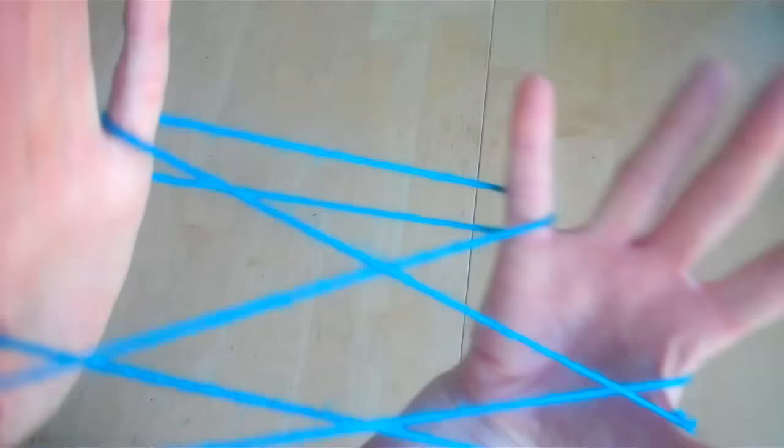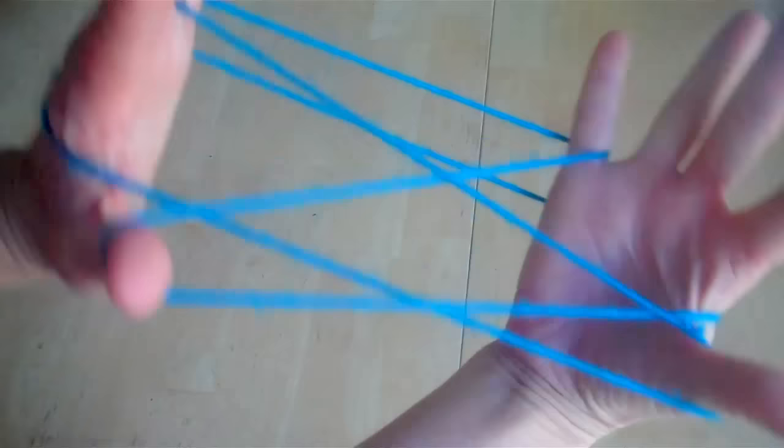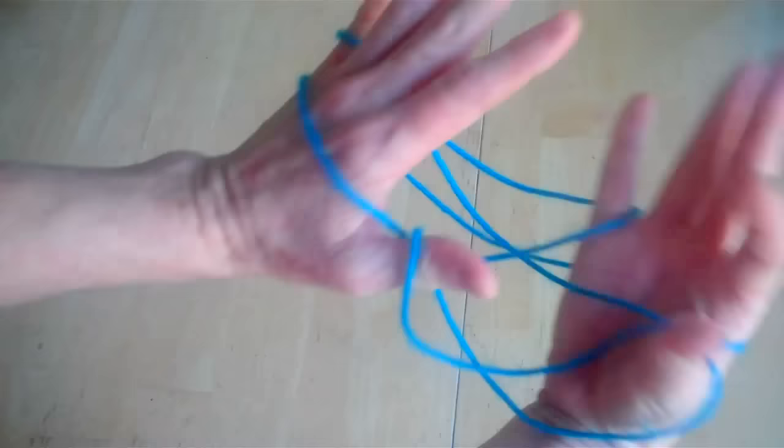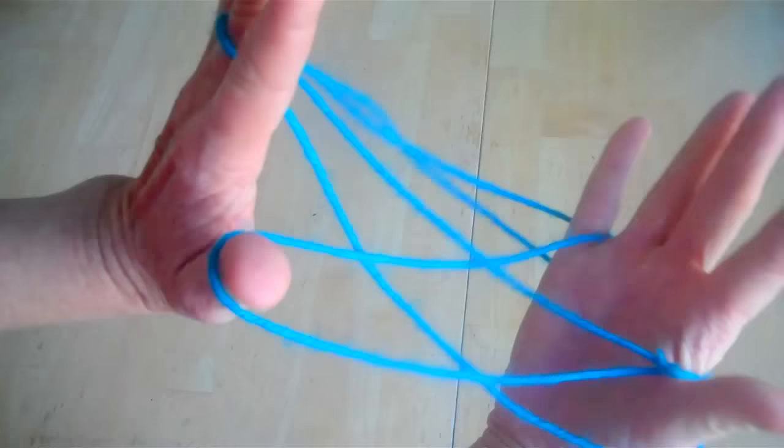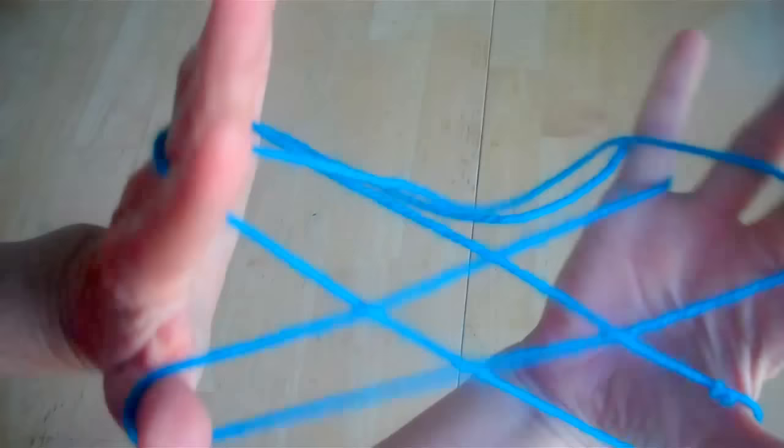Next I'm going to take the string that's on the back of my hand and transfer it around my middle finger. You're just going to have to pick it up for this. Be careful not to lose any of your other strings, just that one string. I'm going to lift it up and put it over my middle finger. I'm going to do that for this hand as well. Don't lose your other strings.